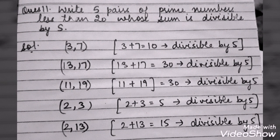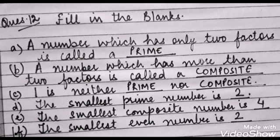Now we are going to do the last question of the exercise, that is question number 12, and it is fill in the blanks. Herein you are going to fill the correct answer. The question is: a number which has only 2 factors is called a prime number.